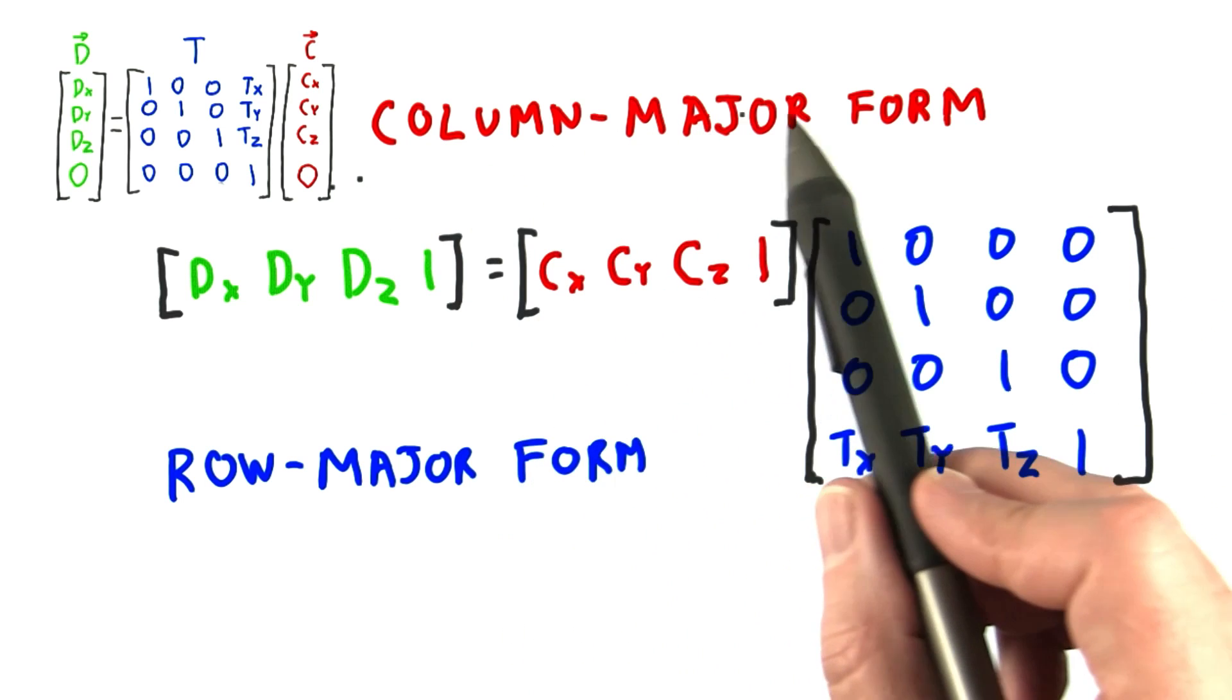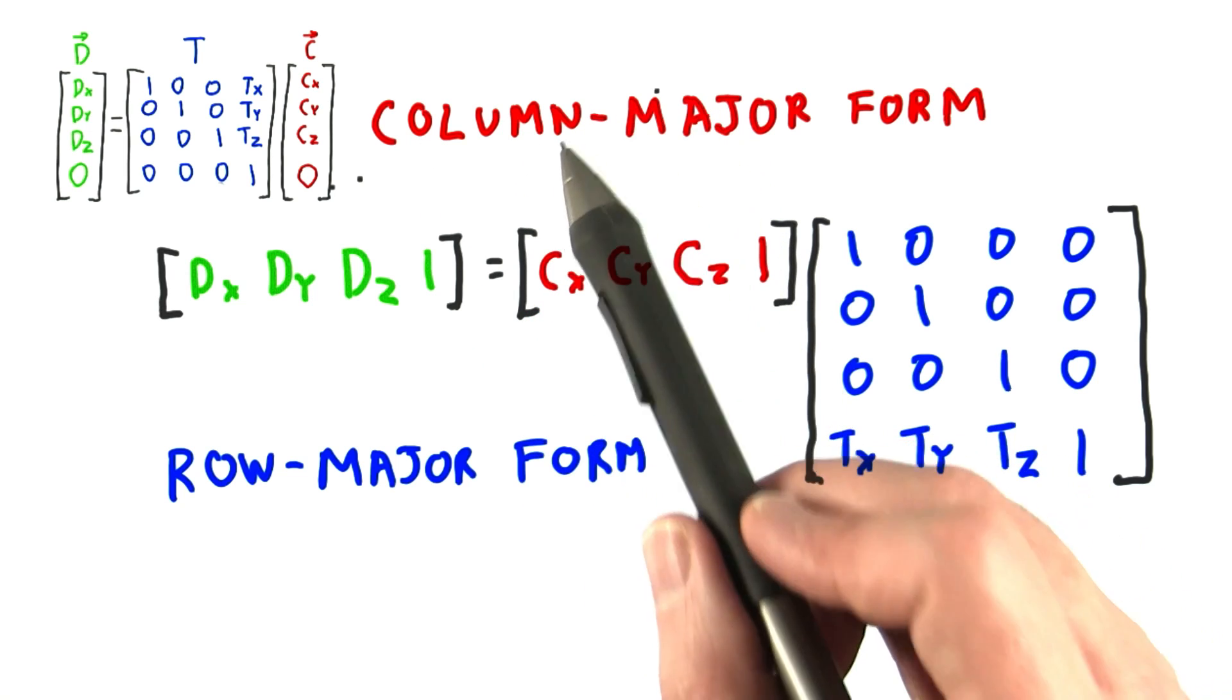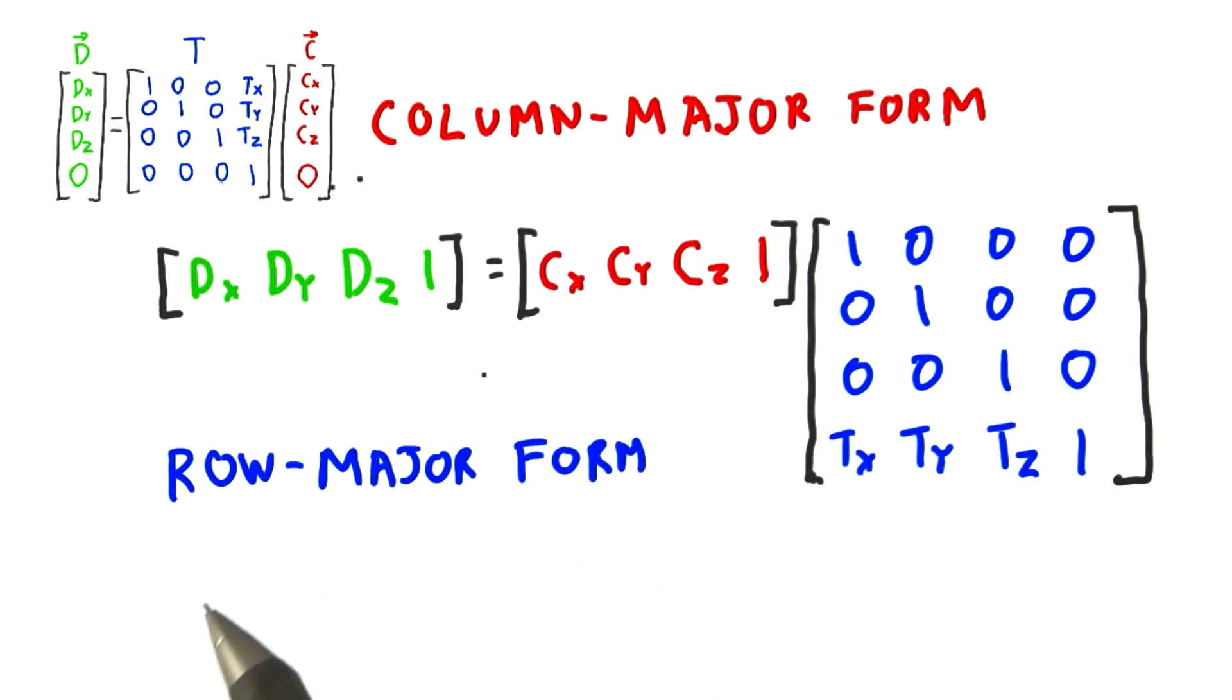All that said, WebGL uses column major notation. And this convention is also the norm in most publications. So that's what we'll use here. Either form is fine. They're both just a way of writing down the math. I mostly want you to be aware that there's another form out there called row major.